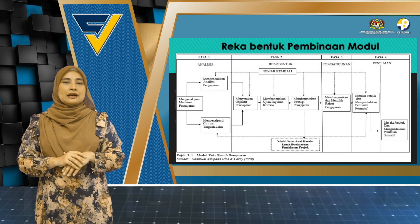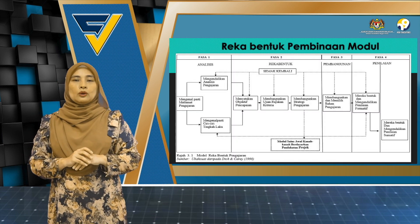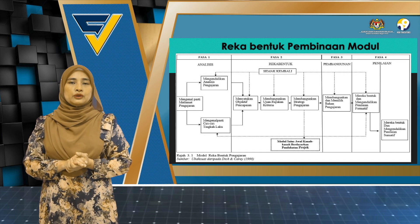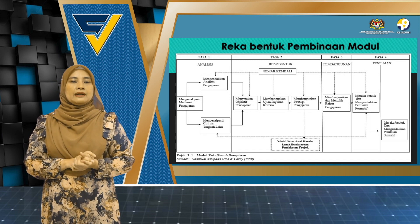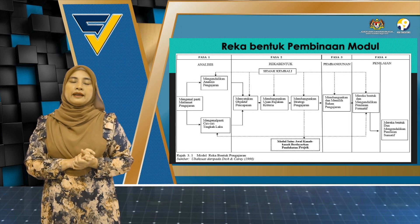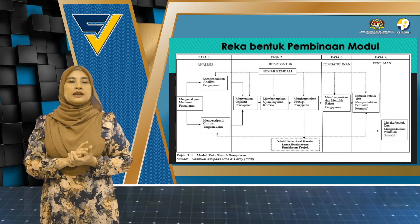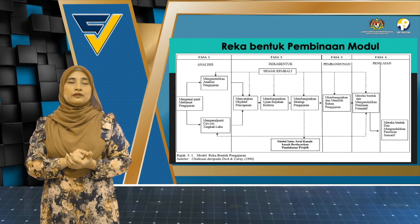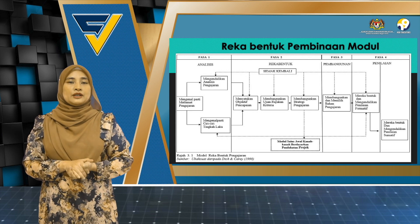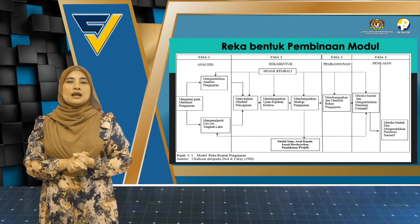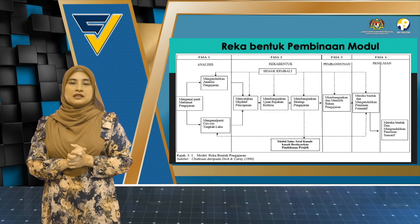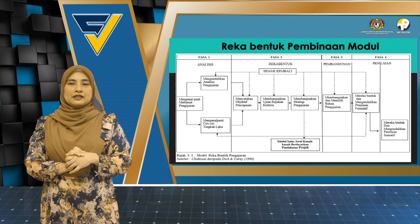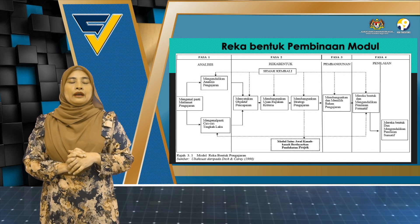Seterusnya tuan-puan, ini ialah rekabentuk pembinaan modul. Modul ini direkabentuk menggunakan model rekabentuk Dick & Carey yang mempunyai empat fasa. Fasa satu, fasa analisis. Fasa dua, fasa rekabentuk. Fasa ketiga, fasa pembangunan. Dan fasa keempat, fasa penilaian.